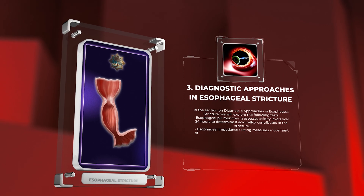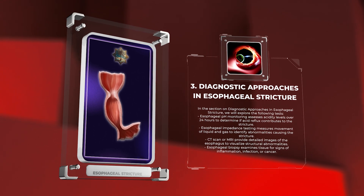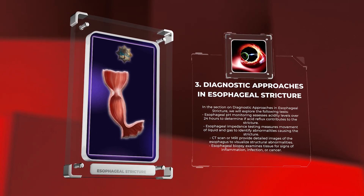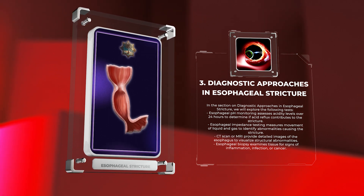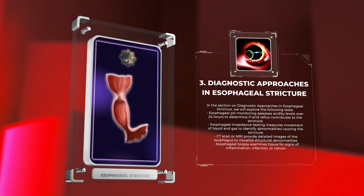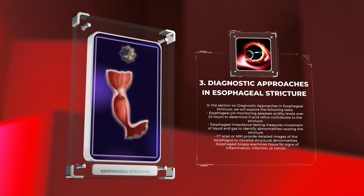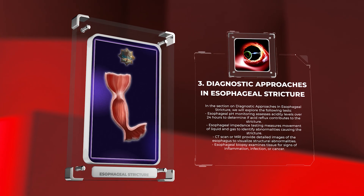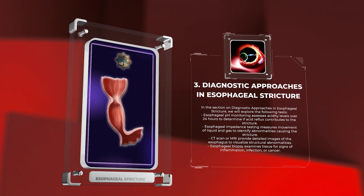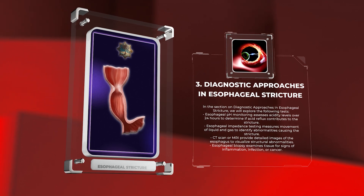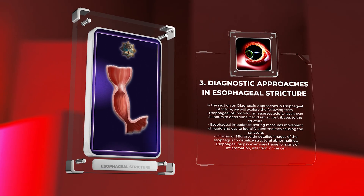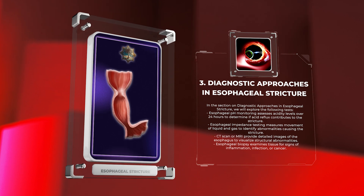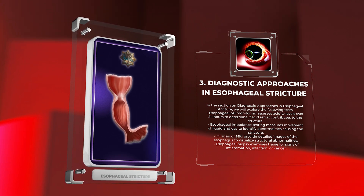In the section on diagnostic approaches in esophageal stricture, we will explore the following tests. Esophageal pH monitoring assesses acidity levels over 24 hours to determine if acid reflux contributes to the stricture. Esophageal impedance testing measures movement of liquid and gas to identify abnormalities causing the stricture. CT scan or MRI provide detailed images of the esophagus to visualize structural abnormalities. Esophageal biopsy examines tissue for signs of inflammation, infection, or cancer.